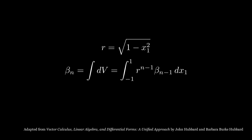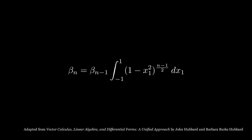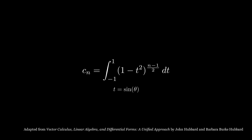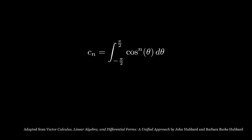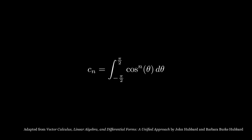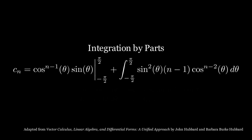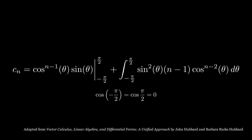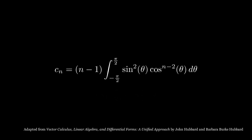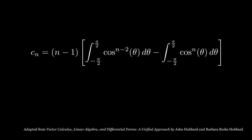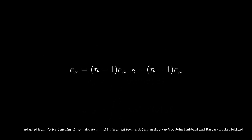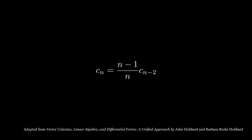Setting up the integral, we have beta-n equals the integral of dV. We pull out beta-(n−1) as a constant, and it remains to figure out the integral, which I denote by c-n, giving us the recurrence relation beta-n equals c-n times beta-(n−1). Using trig substitution and integration by parts, the first term on the right-hand side is 0, and after trig identities and rearranging, we get the beautiful recurrence relation c-n equals (n−1)/n times c-(n−2).